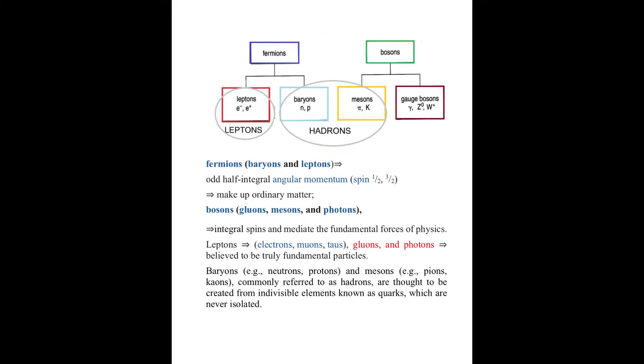This is the classification based on the statistics or spins. Fermions are the particles which obey Fermi-Dirac statistics. Fermions have half integral spin while the bosons have integer spins. Electrons and the nucleons have half spin. Mesons and gauge bosons are all bosons. Baryons and mesons make hadrons. Hadron is superclass of baryons and mesons.